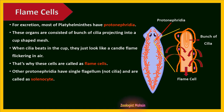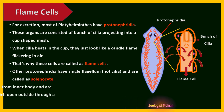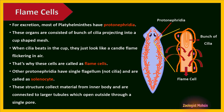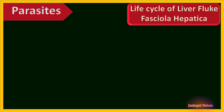Other protonephridia have a single flagellum rather than cilia and are called solenocytes. These structures collect material from the inner body and are connected to larger tubules which open outside through a single pore. Now let's discuss the life cycle of a liver fluke, Fasciola hepatica.